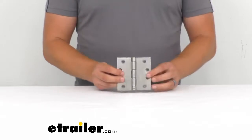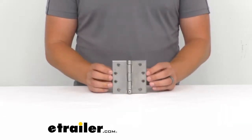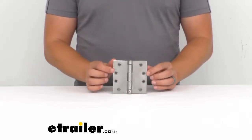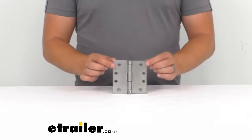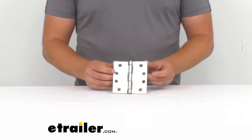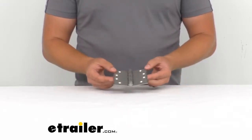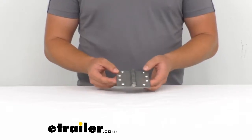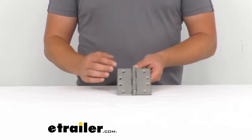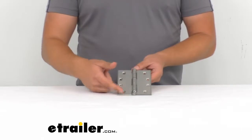Now it does have four holes on each side of the hinge here. These are going to be quarter inch in diameter and they're going to be countersunk, so you're going to want to find hardware that will fit that design there. That'll be really nice because you'll end up with a flat finish here on the top.